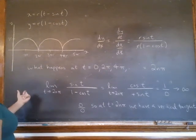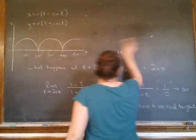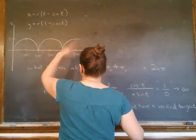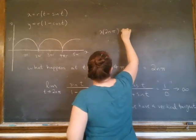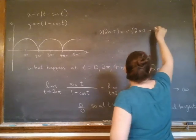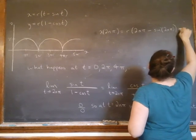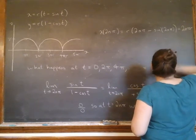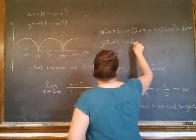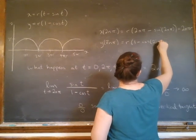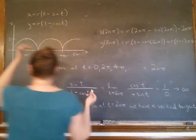And so if I figure out what points those are, I better get 2 pi r, 4 pi r, etc. So let's see. x at 2m pi is going to be r times 2m pi minus sine of 2m pi. This guy is 0. So this is going to be 2m pi r. And then y at 2m pi is going to be r times 1 minus cosine of that guy. 1 minus 1 is 0.